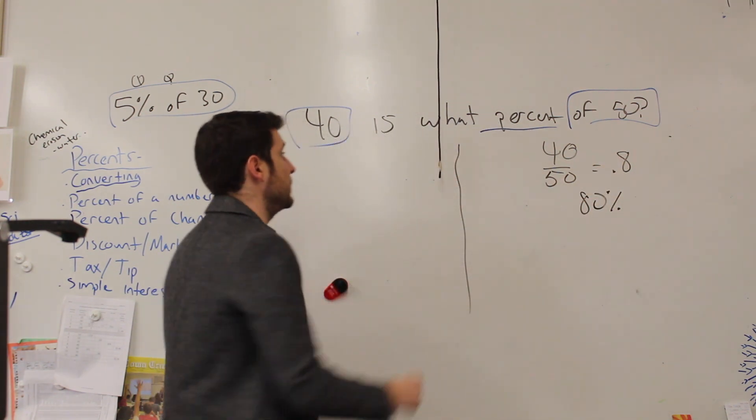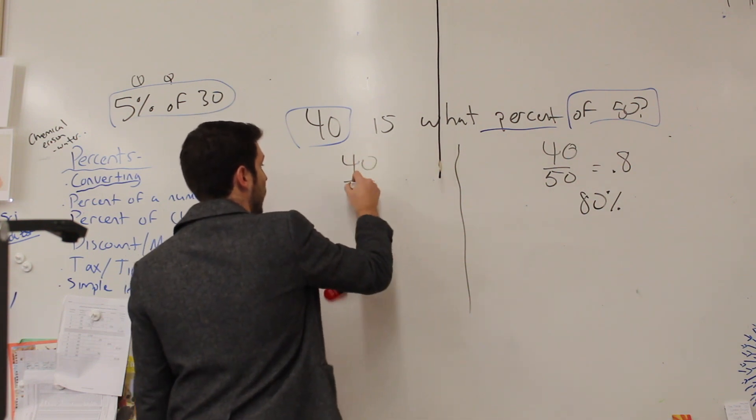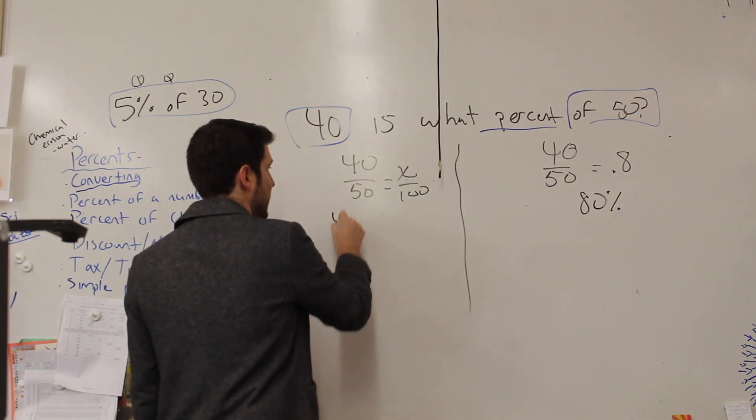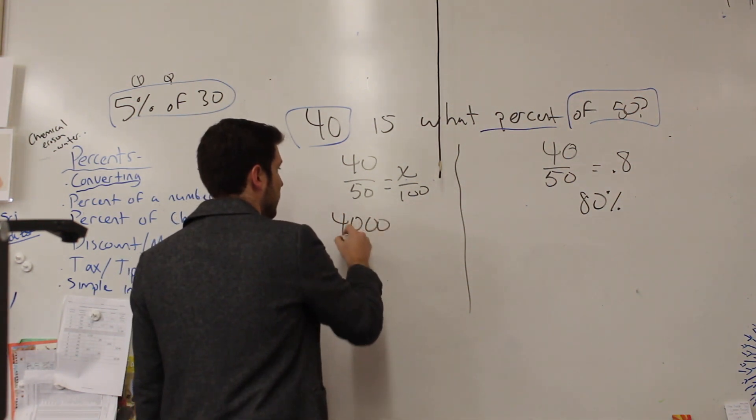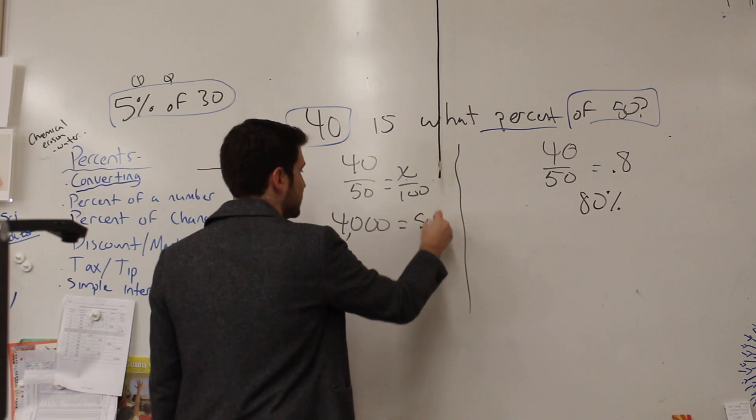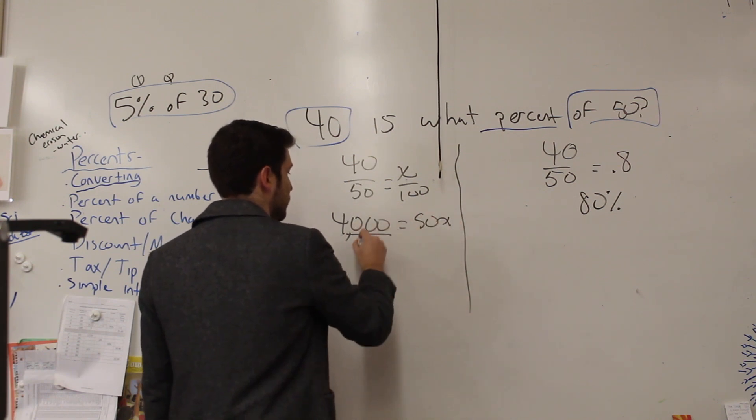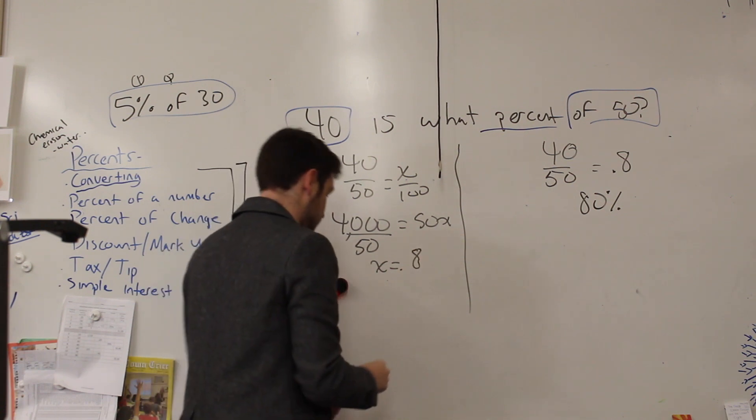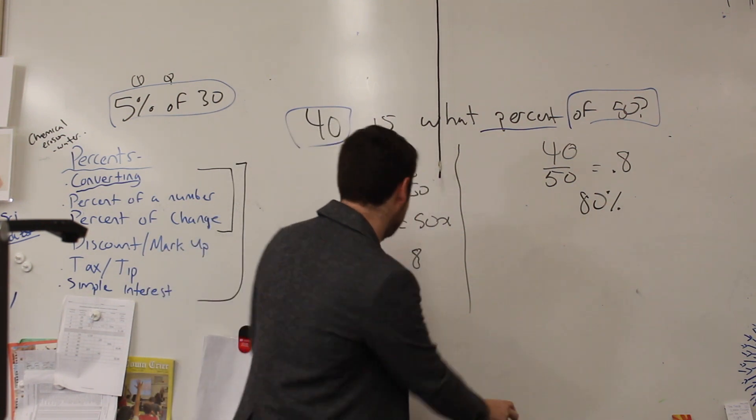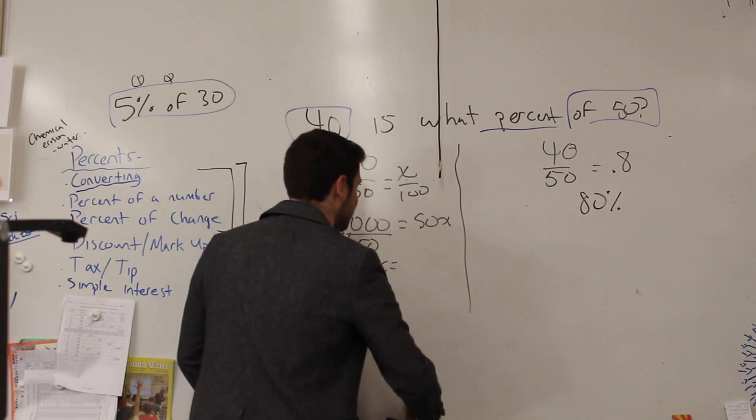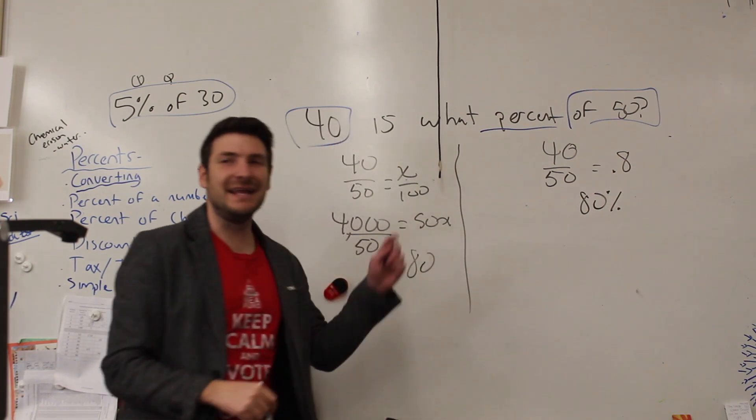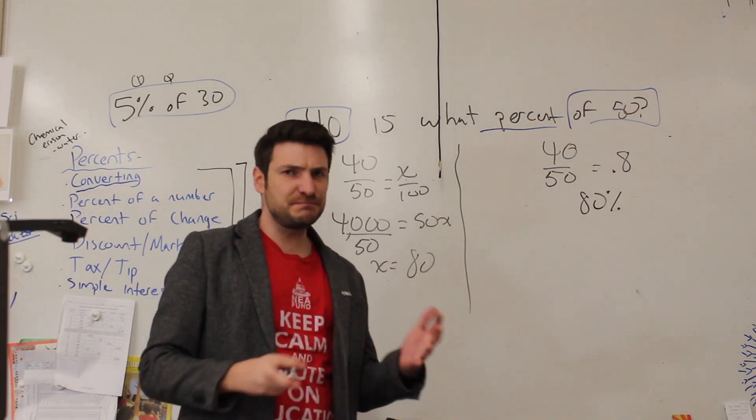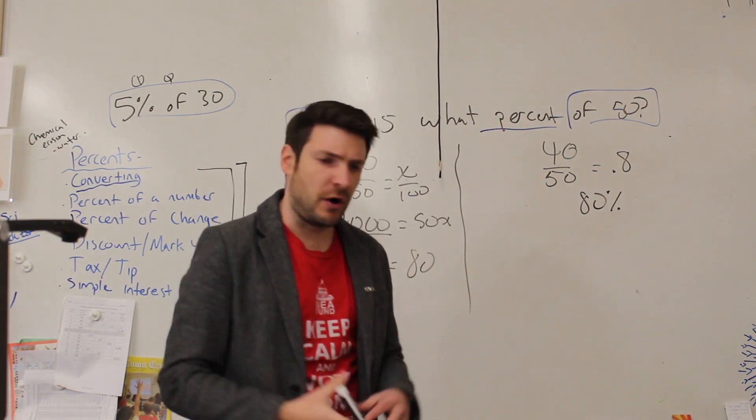Or we can set it up using our formula. 40 over 50 equals x over 100. So we end up with 4,000 equals 50x. When you divide, x equals... just kidding, sorry, long day. x equals 80. Thank you. 80 over 100 is 80%.